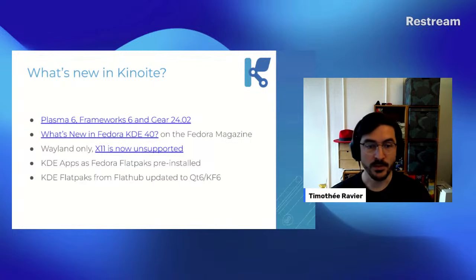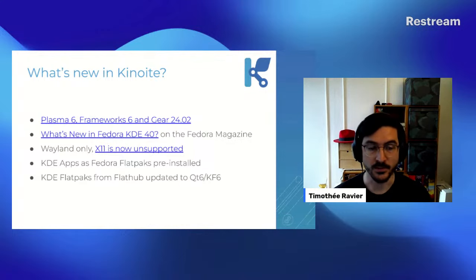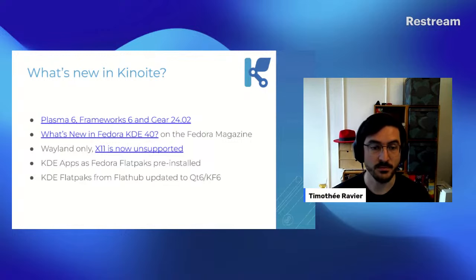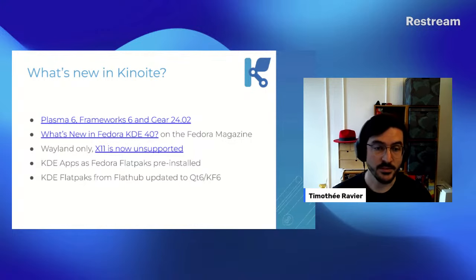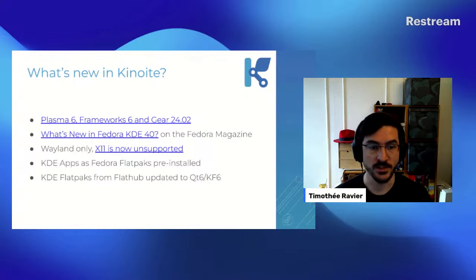We are now shipping a small set of KDE applications built in Fedora infra as Flatpaks, included in the ISO and the default installation — they will be installed for you. We don't have a mechanism yet to install applications on updates, so if you're updating from Fedora 39 Kinoite you won't get those apps automatically; you'll have to install them manually from the Fedora remote. On the Flathub side, most KDE upstream applications are already Qt 6 based, so you can get all that goodness there as well.